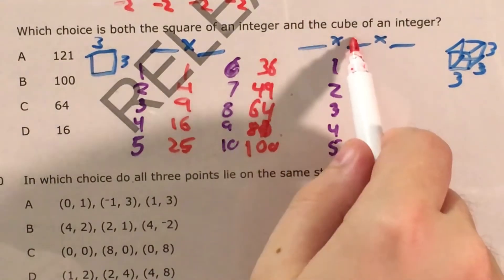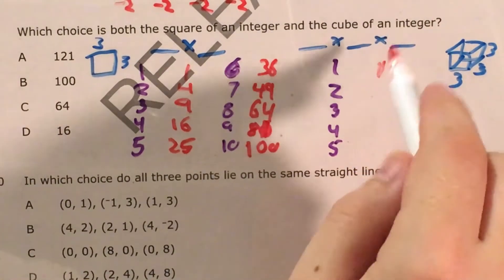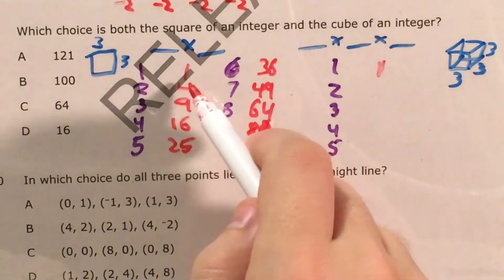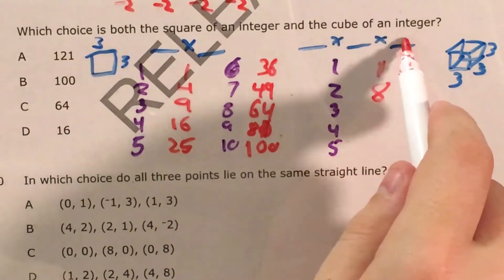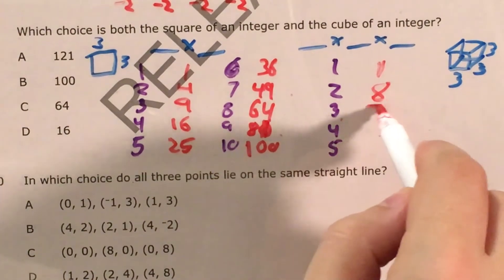So 1 times 1 times 1 is just 1. 2 times 2 times 2 is like 4 times 2, which is 8. 3 times 3 times 3 is like 9 times 3, which is 27.